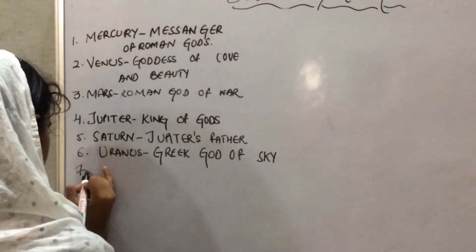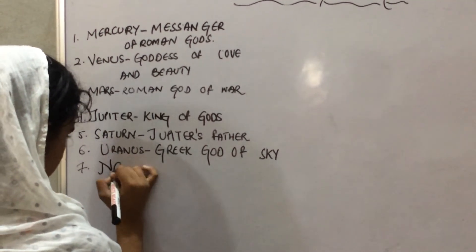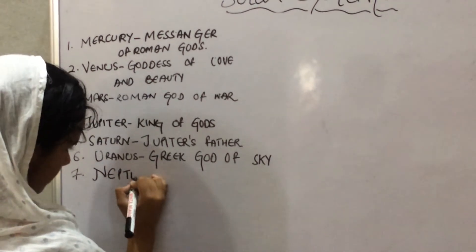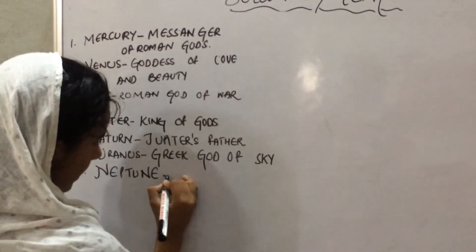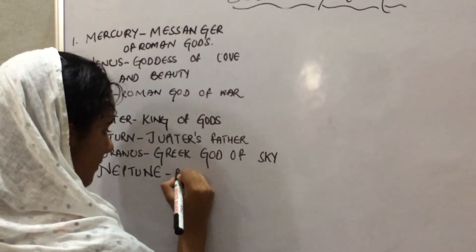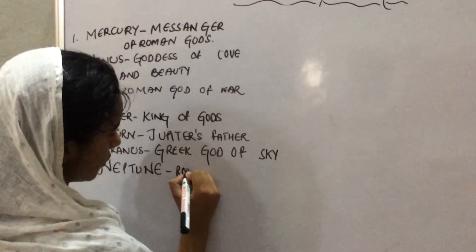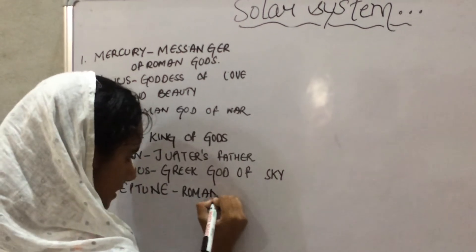Our seventh planet is Neptune. It is named after the Roman god of the sea.